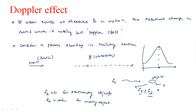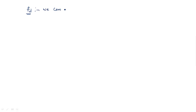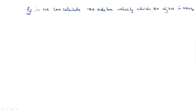Our purpose is to find fd. What is the advantage of finding fd? If we find fd, we can calculate the relative velocity vr with which the object is moving. That means fd is proportional to the relative velocity of the target vr. We need to know the relation between these two. Our aim is to calculate the relation between fd and vr.